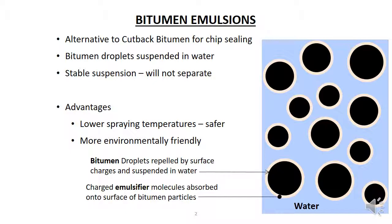Bitumen emulsions are an alternative to cutback bitumen and other hot mixed binders. The emulsion is usually laid at a temperature around 40 to 75 degrees Celsius, which is much lower than the 150 to 180 degrees Celsius used for cutback bitumen, which makes it safer to use. The water essentially replaces cutters such as kerosene, which can harm the environment. Much less energy is also required to produce the emulsions, so emulsions are more environmentally friendly, which is why they are becoming more popular recently.